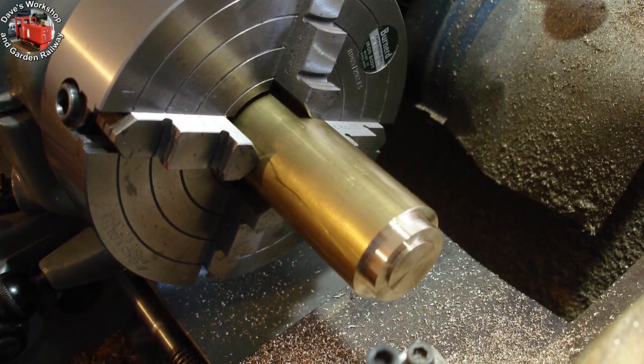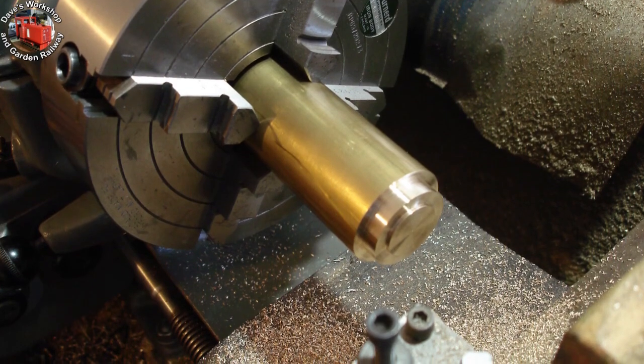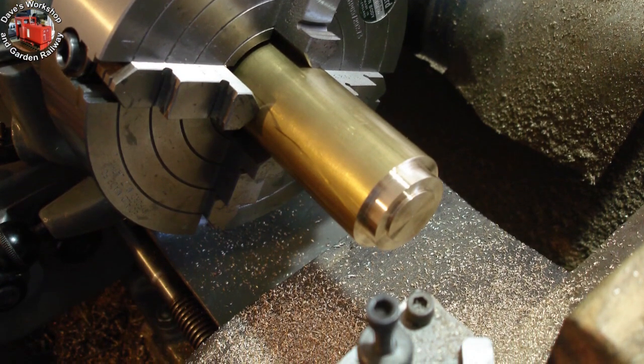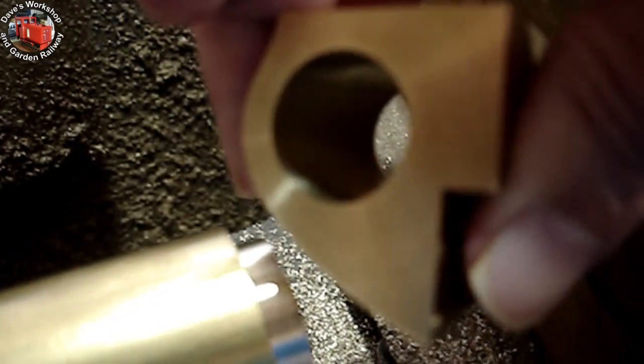The bore register and outside diameter have been turned. It's 1.2 inches diameter, and the register step is 50 thou. It goes right up to the start of the steam ports. I'm testing the fit of the cylinder on the register before cutting off the first cylinder cover.